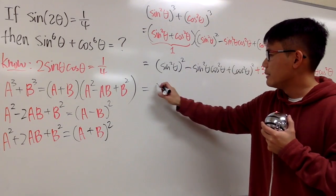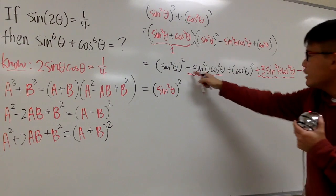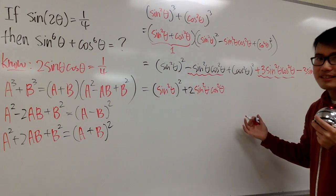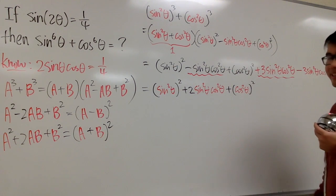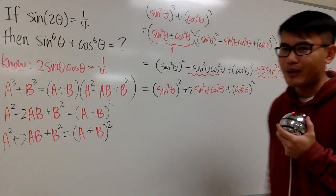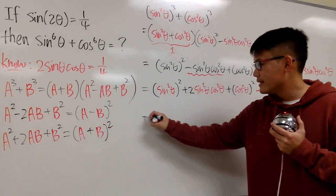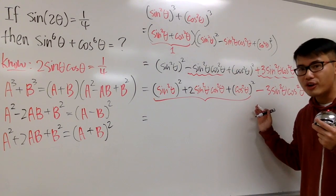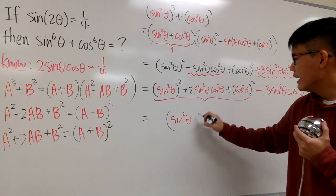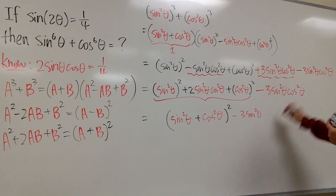Let me write this out: (sin²θ)² + 2·sin²θ·cos²θ + (cos²θ)² − 3sin²θcos²θ. The first three terms match a² + 2ab + b² = (a + b)², so they equal (sin²θ + cos²θ)² = 1² = 1. Don't forget the remaining term: minus 3sin²θcos²θ.